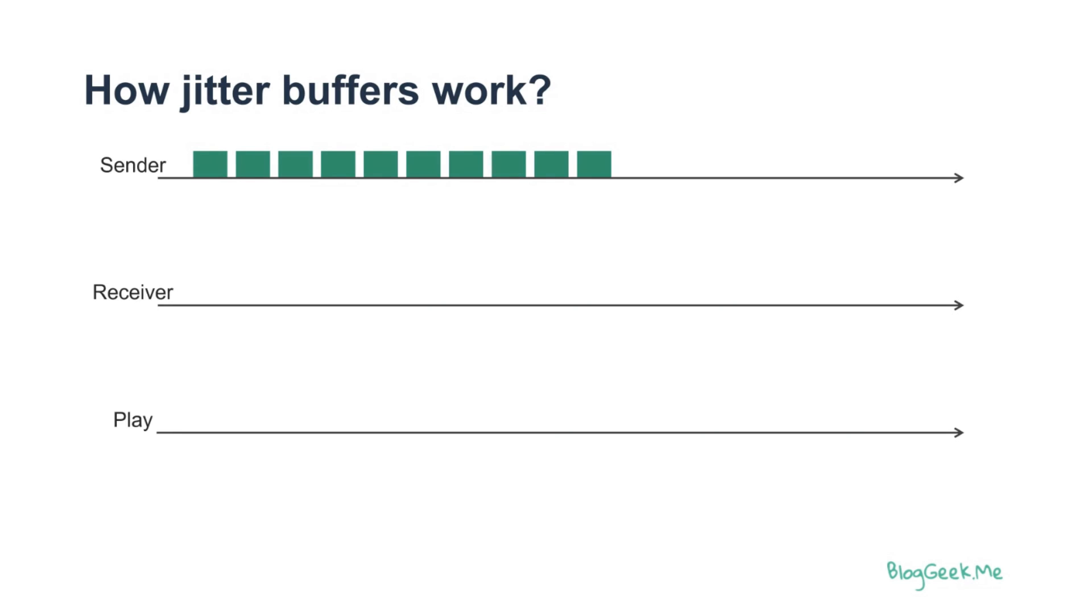Let's take a look at how jitter buffers work and from there see what makes them adaptive. So we've got here three lines, each one representing what is happening.